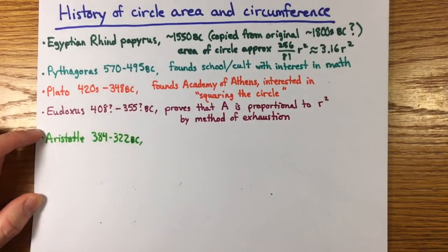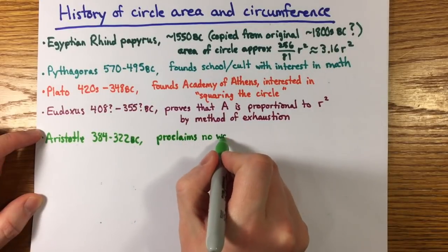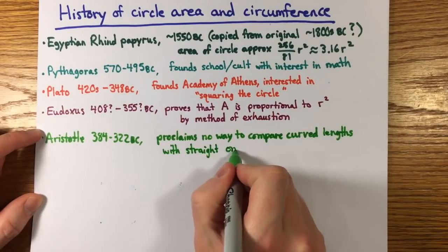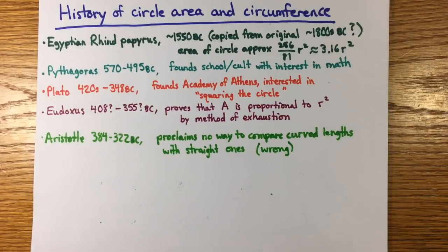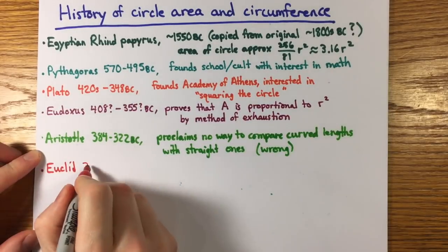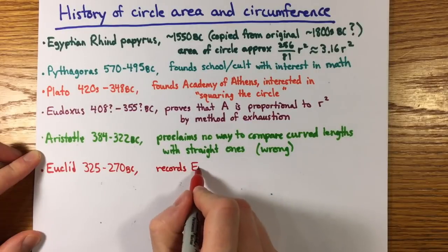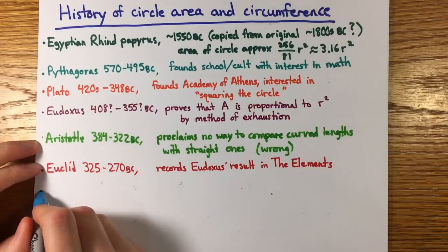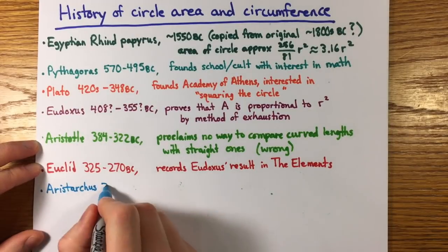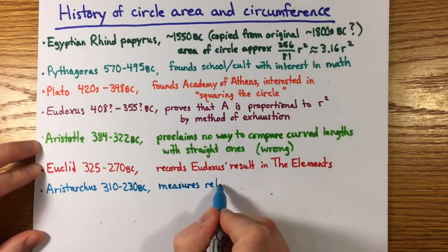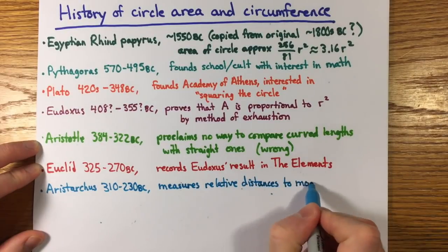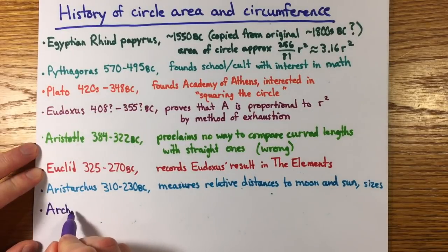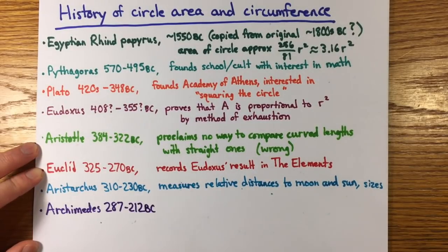I'll come back to Aristotle in a moment. Euclid wrote the most famous book of geometry in antiquity, but for circles, all he was able to do was record Eudoxus' work without any further progress. I'll also mention Aristarchus of Samos. He was a great mathematician slash astronomer who measured the distances to the moon and sun. All of these were very smart people who were very interested in the area and circumference of a circle, and none could show that A equals one-half CR, which was finally proved by Archimedes, probably the greatest mathematician in antiquity.